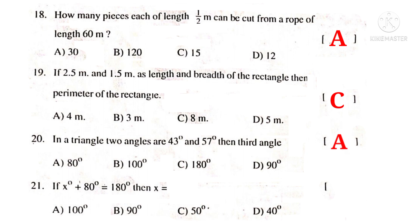If x degrees plus 80 degrees is equal to 180 degrees, then x is equal to. When 100 degrees is added to 80 degrees, it gives 180 degrees. So, the value of x is equal to 100 degrees. So, the correct choice is A.